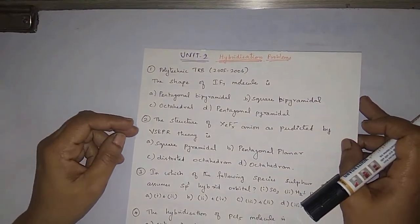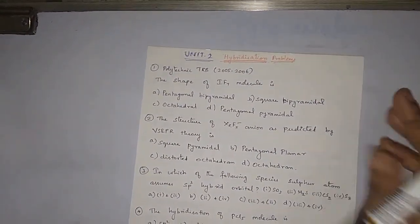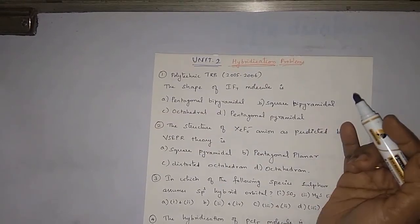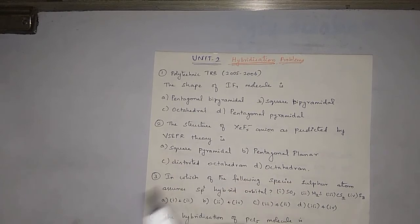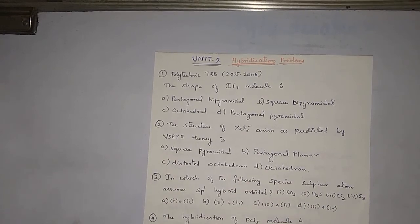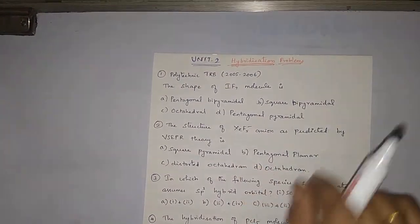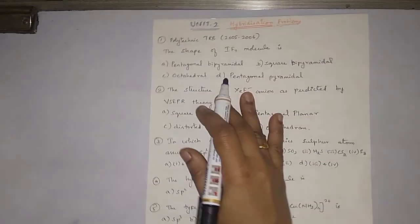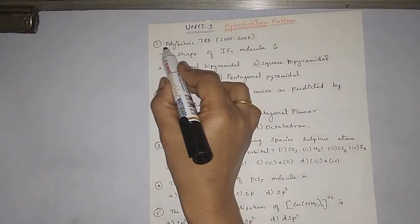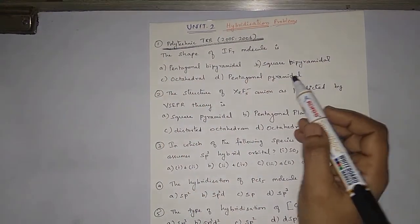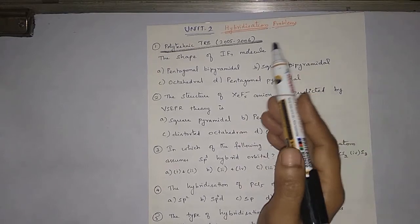Today we are going to see hybridization problems, which comes under Unit 2 of the polytechnic syllabus. Hybridization problems appear everywhere — so many problems come from this topic. I have taken questions from polytechnic TRB and some other places as well.